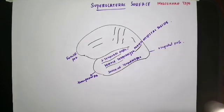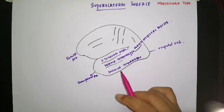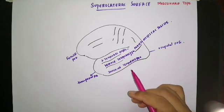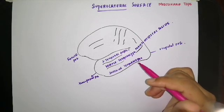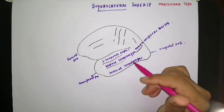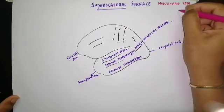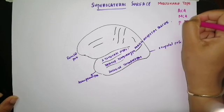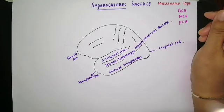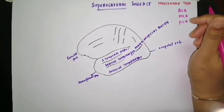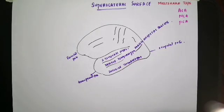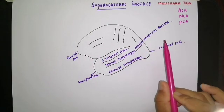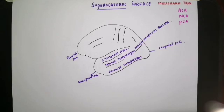On the suprolateral surface, the main artery supplying this surface is the middle cerebral artery. The three arteries we are going to discuss are: ACA — anterior cerebral artery, MCA — middle cerebral artery, and PCA — posterior cerebral artery. These three arteries supply the cerebral cortex of the brain.